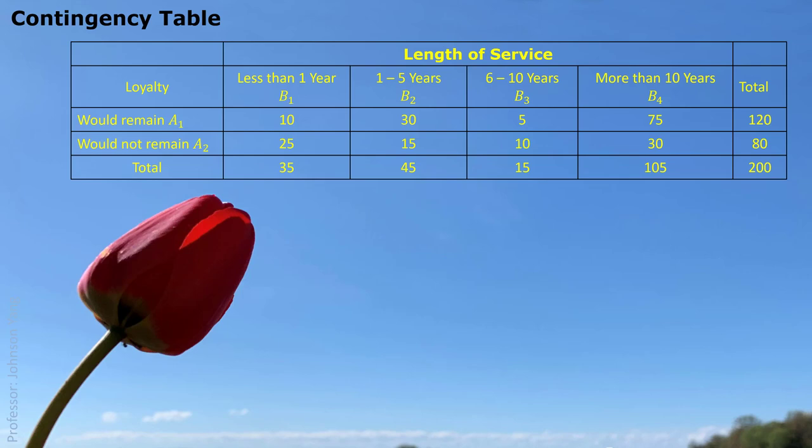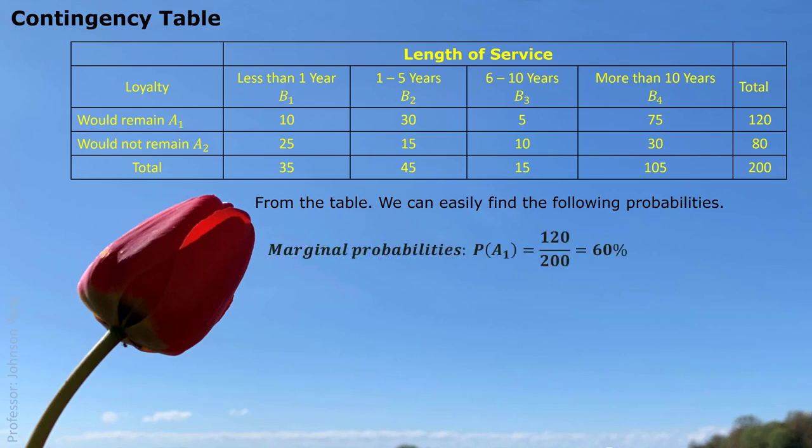The contingency table is a very typical situation and we can use this table to figure out all kinds of related probabilities. For example, from this survey, how much chance that a randomly picked person answered yes — going to stay with the company? We use 120 divided by the total number 200, since we have 120 people who answered yes out of 200. That gives us 60%. This 60% we also call the marginal probability; 120 was earlier mentioned as the marginal frequency.